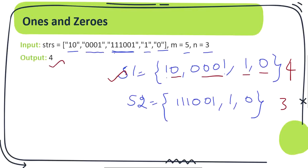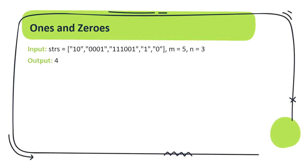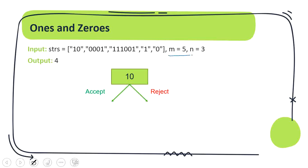How are we going to approach this problem? When considering a string to put in our subset, there are two options: either we accept the string and add it to our subset, or we reject the string and move on to the next one. If we accept the string, the total number of m's and n's — that is the number of zeros and ones — will reduce by the count of zeros and ones in that string. Then m and n will become four and two.